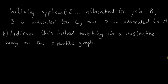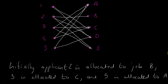We've drawn our bipartite graph and it wants us to join 2 to B, etc. In a distinctive way, I've picked the color green. We're going to do 2 to job B, just from there to there. 3 is allocated to C, and 5 is allocated to A.